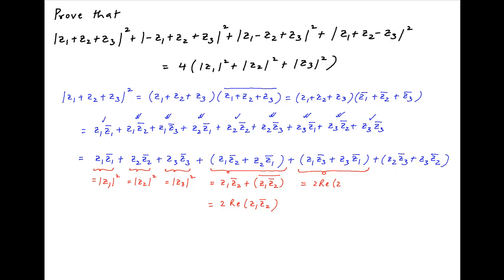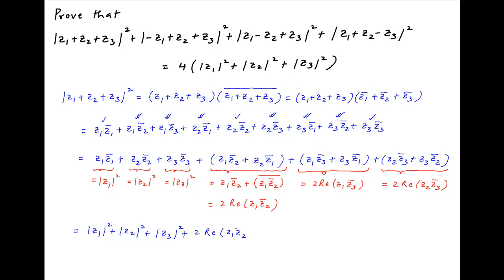Similarly, the following term is equal to two times the real part of z1 times the conjugate of z3, and the last term is equal to two times the real part of z2 times the conjugate of z3. Therefore, the square of the absolute value of z1 plus z2 plus z3 equals the square of the absolute value of z1 plus the square of the absolute value of z2 plus the square of the absolute value of z3, plus two times the real part of z1 times the conjugate of z2, plus two times the real part of z1 times the conjugate of z3, plus two times the real part of z2 times the conjugate of z3. Let's call this result 1.